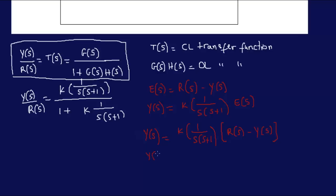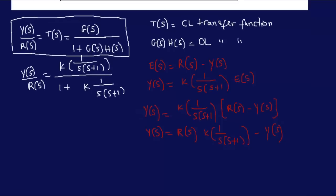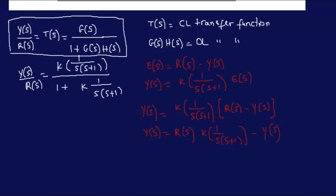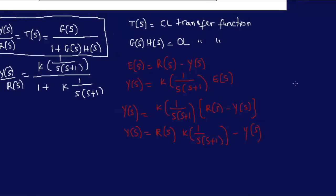So, Y of S is equal to, we can multiply this out. So, we have R of S times K 1 over S, S plus 1 minus Y of S, K, 1 over S, S plus 1.